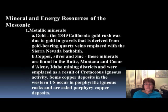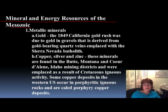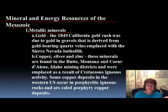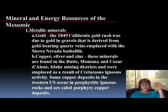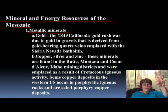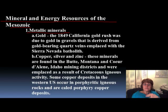Right now we are at the mineral and energy resources of the Mesozoic, starting with the metallic minerals. Because of these batholiths, there were some intrusive rocks related to the batholiths — these are the more mobile magma which actually made it up to the surface and made andesite volcanoes, which are strato-volcanoes like Mount St. Helens and Mount Rainier today.